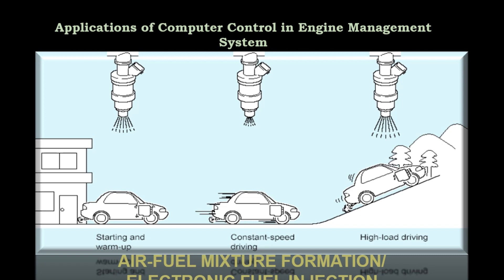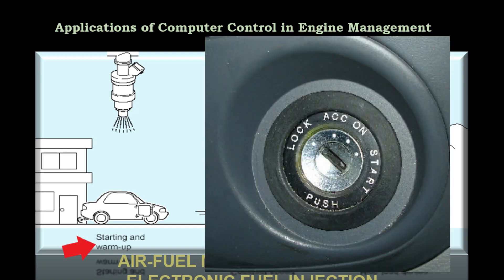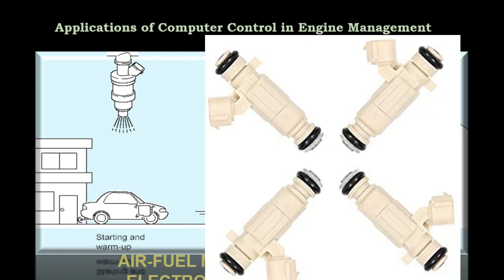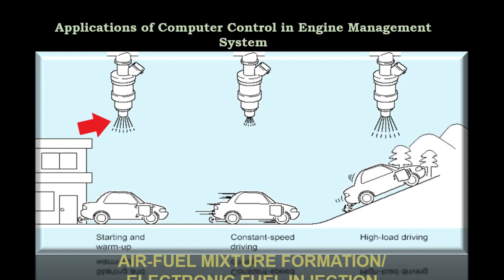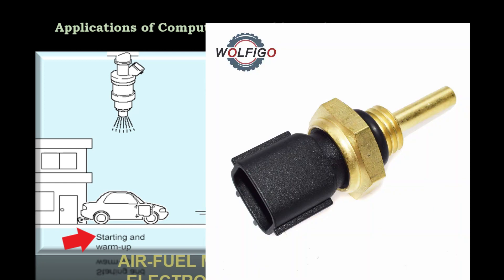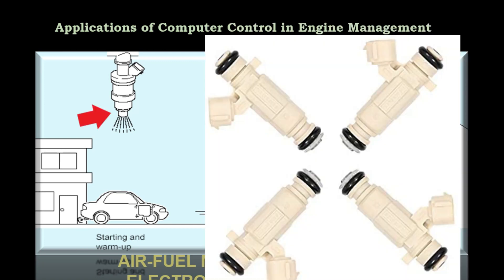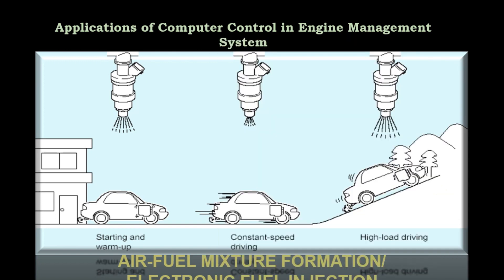For air-fuel mixture formation, the EFI system uses different sensors to detect the operating condition of both the engine and vehicle. Based on these signals, the ECM calculates the correct fuel injection volume, and the injectors inject the proper volume of fuel at the correct timing. During startup, the ECM receives signals from the ignition switch and the crankshaft position sensor, commanding all injectors to inject fuel simultaneously to ensure engine startability. At the same time, the engine coolant temperature sensor sends information to the ECM — if the engine is cold, the injectors inject extra fuel to ensure steady idle during warm-up.